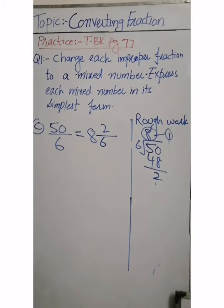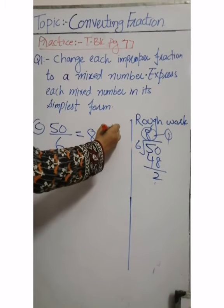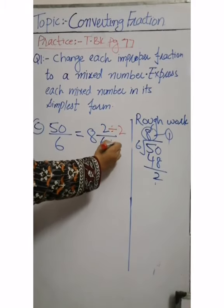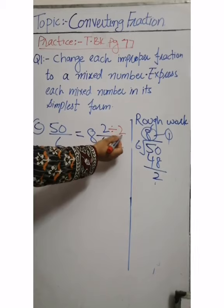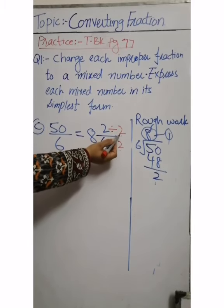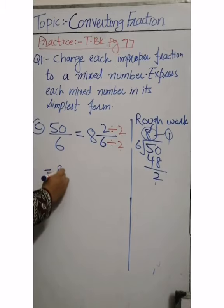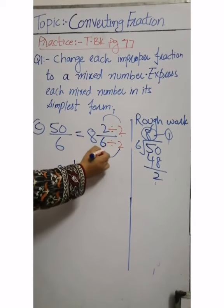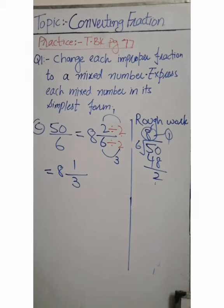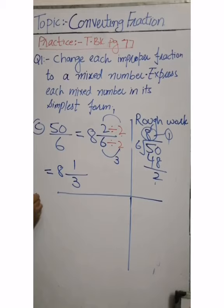This gives the answer 8 whole 2 by 6 as a mixed number, but this mixed number is not simplified. We simplify it by dividing numerator and denominator by the same factor. We take 2 as a factor; 2 divides both 2 and 6. So we get 8 whole 1 by 3 as the simplified answer.